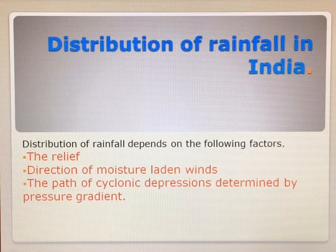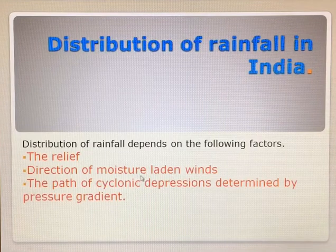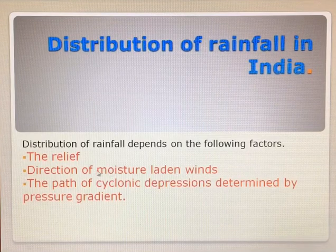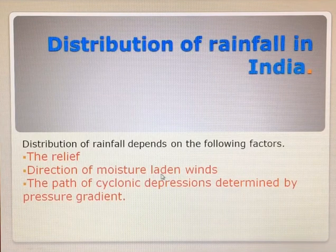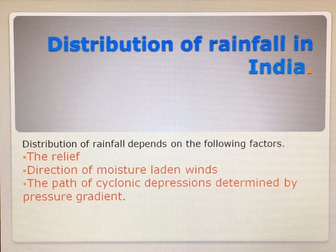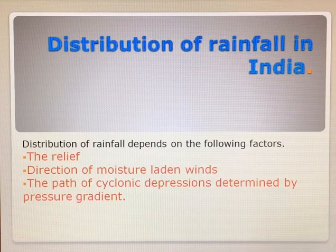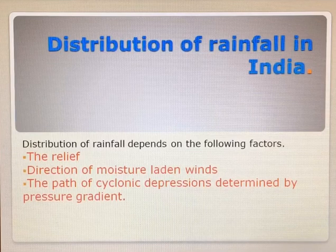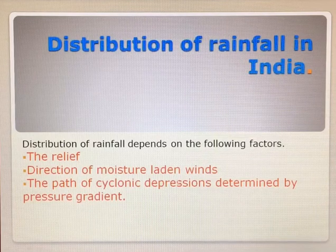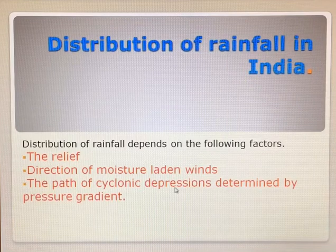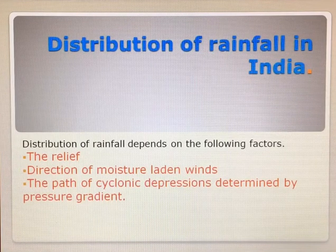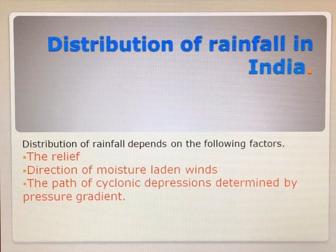Moving on to the next and the last factor, they are quite similar. In both cases, pressure conditions are very important. When you talk about moisture-laden winds, pressure is playing a very important role. If suitable pressure conditions are there, these moisture-laden winds are attracted towards the particular area; if not, they are not going to get attracted. Similarly, for cyclonic depressions, you also need suitable conditions for them to be attracted towards a particular area.